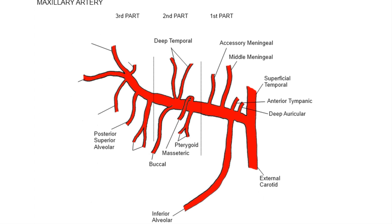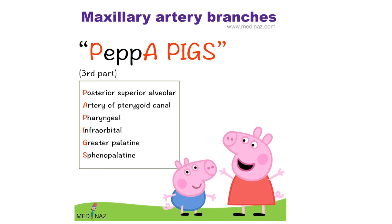The third part contains Posterior Superior Alveolar Branch, Artery to Pterygoid Canal, Pharyngeal Branch, Infraorbital Branch, Greater Palatine Branch, and Sphenopalatine Branch. The mnemonic for the third part is PEPAPIGS — a famous cartoon character. Follow the red letters: P for Posterior Superior Alveolar, A for Artery to Pterygoid Canal, P for Pharyngeal Branch, I for Infraorbital Branch, G for Greater Palatine Branch, and S for Sphenopalatine Branch.